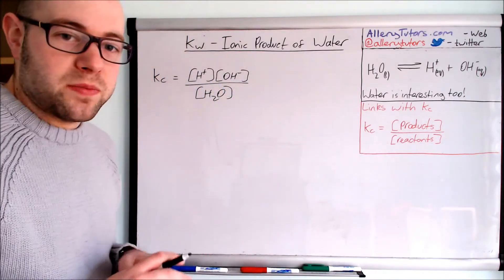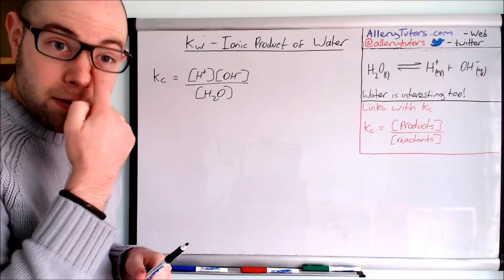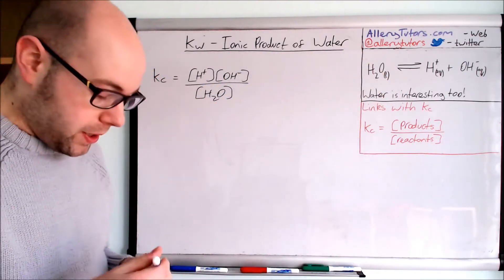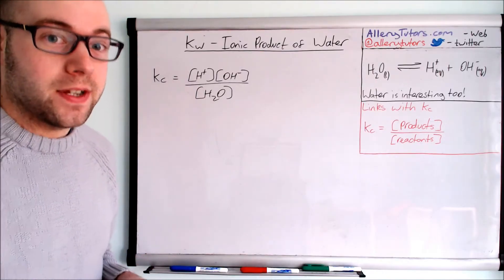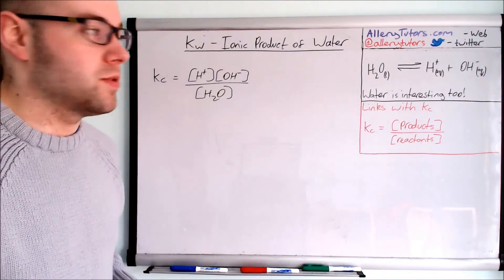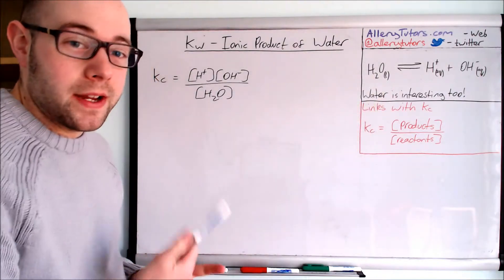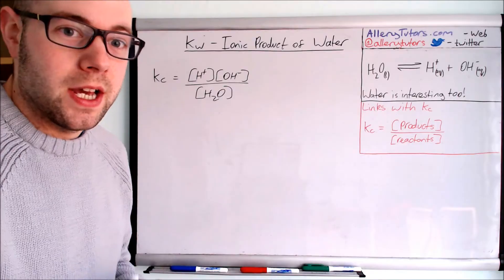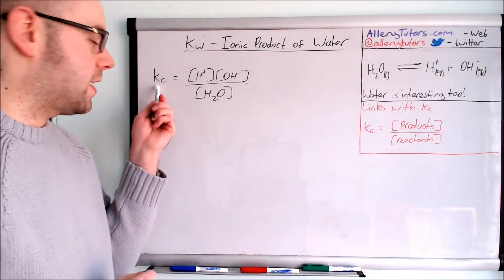This equation is in equilibrium, but the equilibrium lies well to the left. Water is very weak at dissociating, so we have a mammoth amount of H2O and a very small amount of H plus and OH minus ions. This has a massive effect on our Kc value.